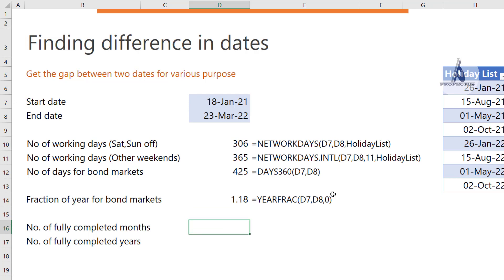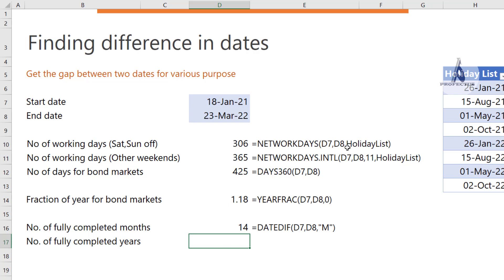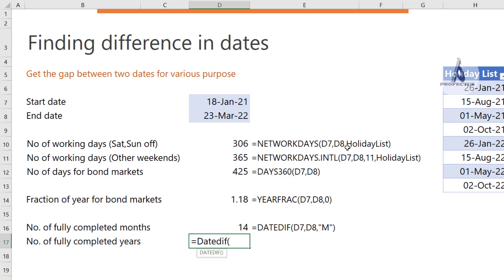Finally, the DATEDIF function is useful for finding differences in whole months or whole years between two dates. Note that this function has no tooltips in Excel — it's a hidden or private function. Syntax is DATEDIF(start_date, end_date, unit). Use "M" for fully completed months and "Y" for fully completed years.